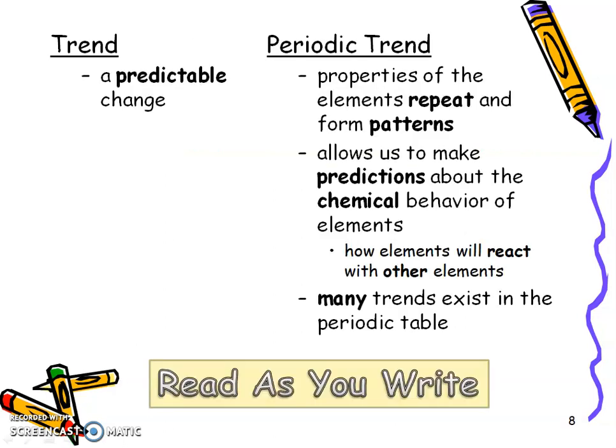So make sure to pause the video and write in the words and then play to hear my thoughts. And again, read as you write. So first let's talk about a trend. If we're talking about periodic trends, what's a general trend? Well, a trend is a predictable change. Just like society has trends when it comes to clothes. Something that might have been very popular in the 1950s might be re-popular in the 2010s, right? So things are predictable. Those trends are predictable.